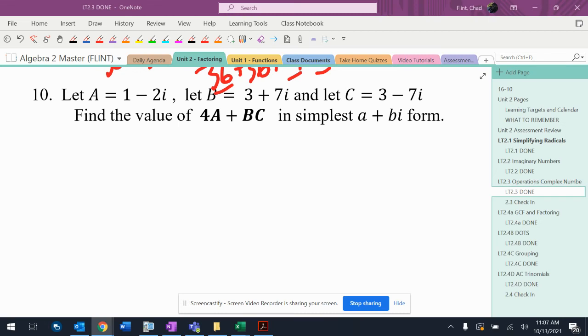Alright, so I got A, I got B, I got C. It says 4A plus BC. I like to highlight things like this, so there's B and there's C.